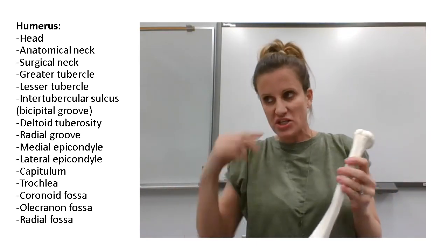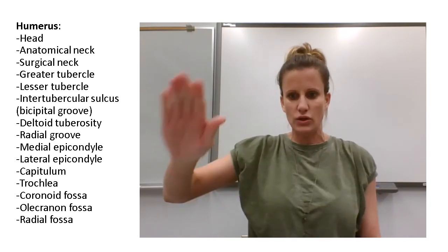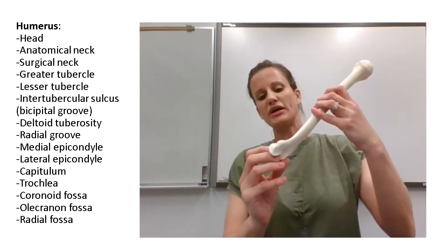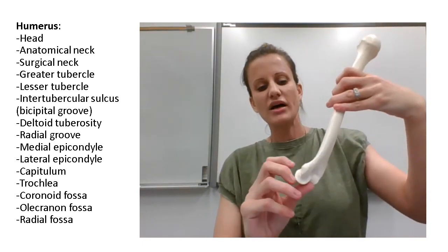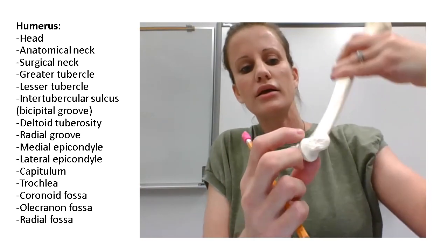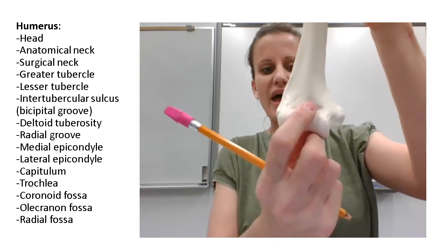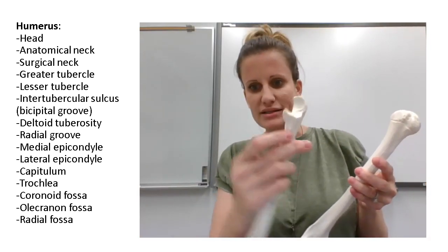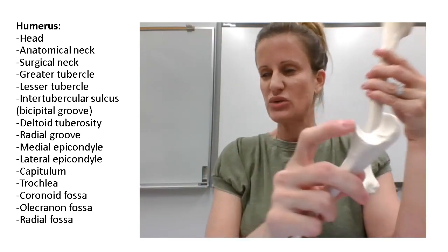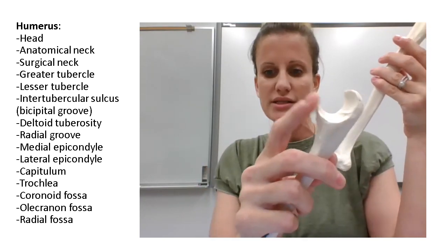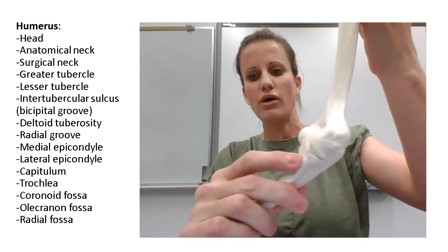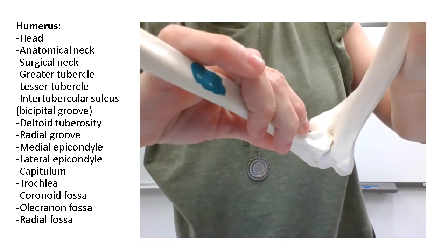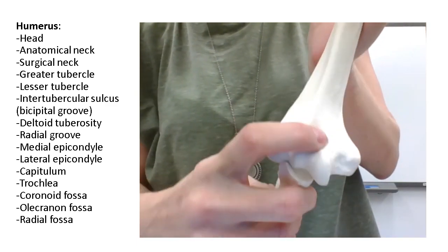The last things we have are a few fossae — a fossa is a smooth depression, typically in conjunction with joints. We have three fossae at the distal part of the humerus. The fossa in the front is this little depression just above the trochlea, called the coronoid fossa. It's there for the coronoid process of the ulna to slide into — when you bend your elbow, that coronoid process fits right up into the coronoid fossa.